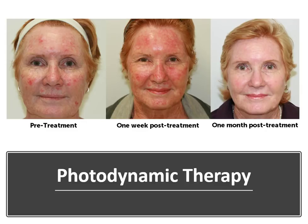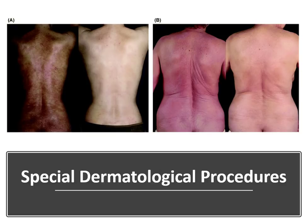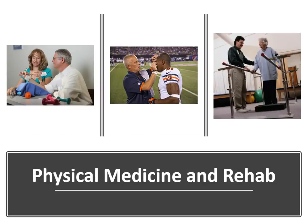Next on page 722, we have photodynamic therapy, where certain lesions on the skin are actually treated. Then on page 723, we have special dermatological procedures — more services provided from a skin perspective. Please note the characteristics of each of these codes, as they have certain characteristics that must be documented in order to report them.